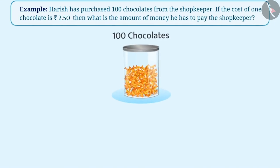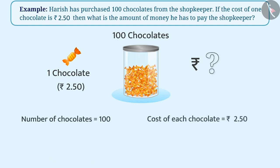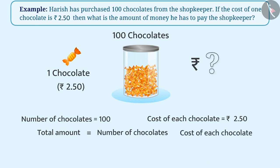Harish has purchased 100 chocolates from the shopkeeper. If the cost of one chocolate is rupees 2.50, then find the amount of money he has to pay the shopkeeper. Since Harish has purchased 100 chocolates and the cost of each chocolate is rupees 2.50, in order to find the total amount of money, we have to multiply the number of chocolates with the cost of each chocolate. That means we have to multiply 100 and 2.50.